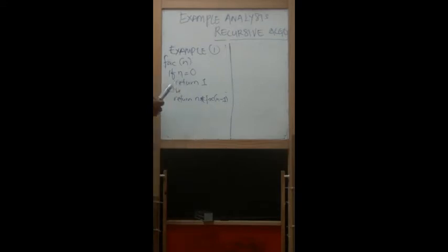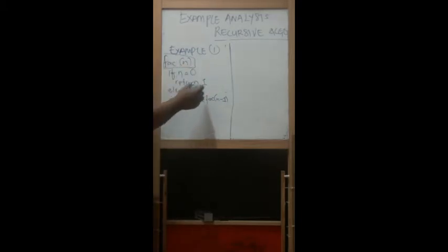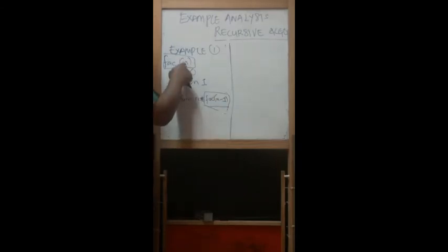Now, for the first example of recursive algorithm, this is called factorial. You know already the factorial? Previously we discussed this. Factorial here is based on the recursive. We have the method here called 'fact'. This method calls itself — it's a small copy of itself here.